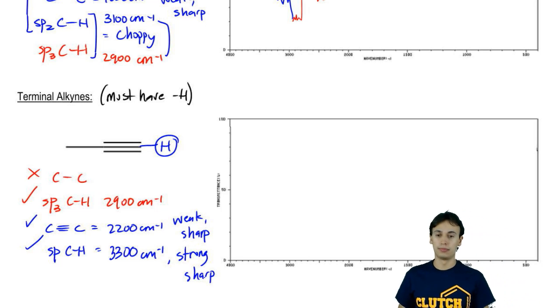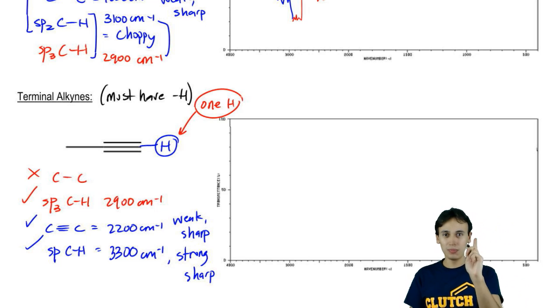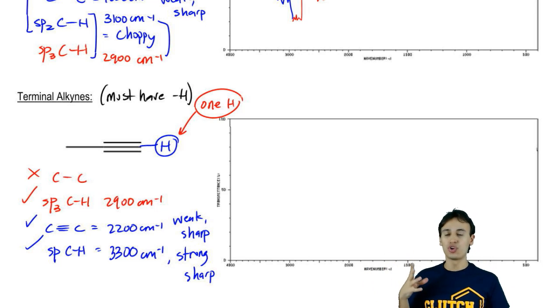So you might be wondering, Johnny, why is this hydrocarbon, why is this H showing up as sharp when all the other H's that I've been drawing have been choppy? And the answer actually lies in the drawing. Notice that the drawing, I only have one. There's only one H. So why would it be choppy? There's only one absorption that's going to happen. It's from that exact hydrogen. So that can't be choppy. It's going to be just one lone sharp peak at 3,300.